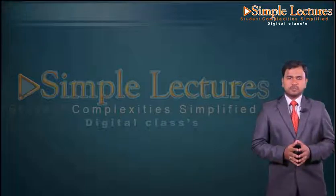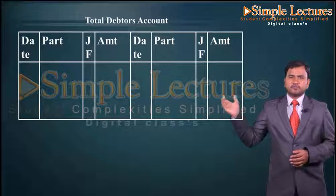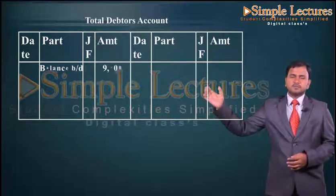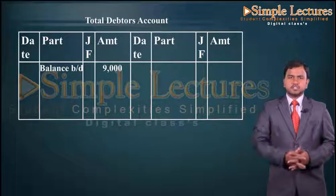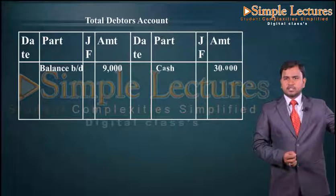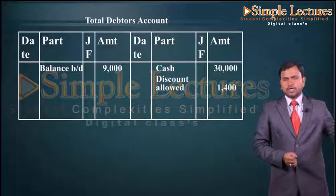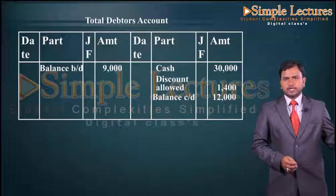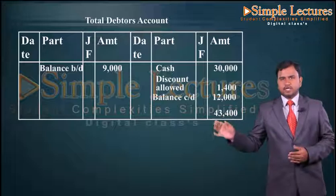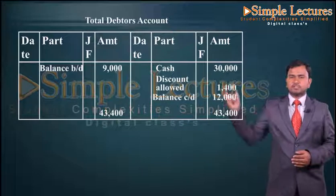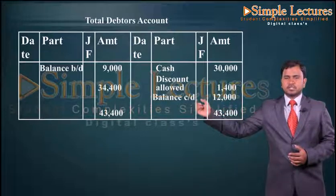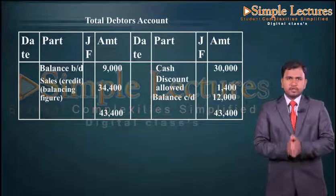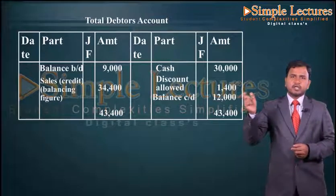Now let us see how the total debtors account is prepared for Om Prakash. Debtors is an asset; the opening balance goes on the debit side: balance brought down ninety thousand. Cash received is recorded on the credit side: cash thirty thousand. Discount allowed: one thousand four hundred. Closing balance of debtors: balance carried down twelve thousand. The total of the credit side is forty three thousand four hundred; the same on the debit side. The difference is thirty four thousand four hundred, which is the credit sales — balancing figure.